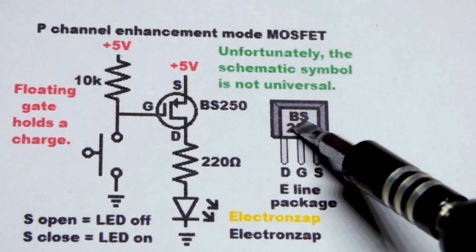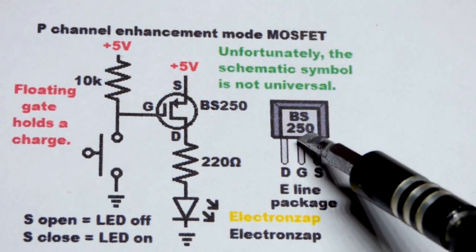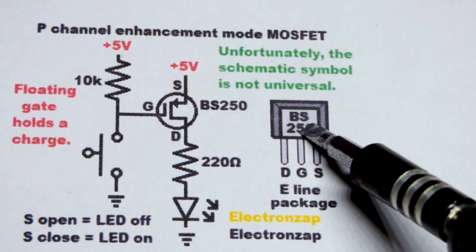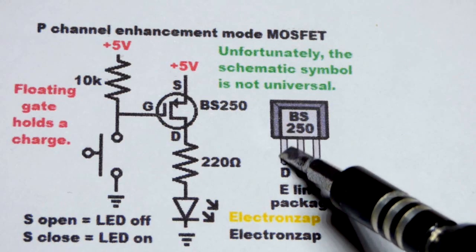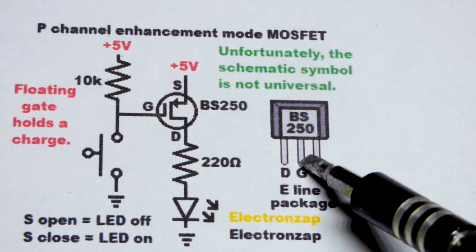But in any case, the little square side with the writing on it is the front. And looking at the data sheet, I found the pin layout to be left pin drain, middle pin gate,